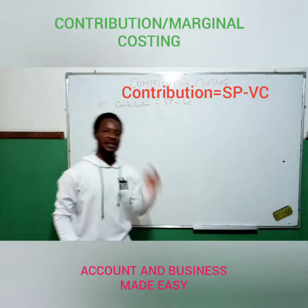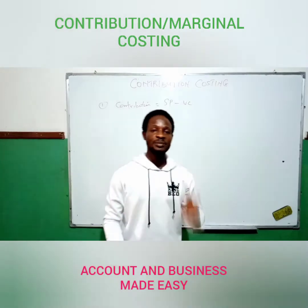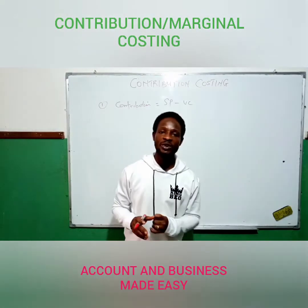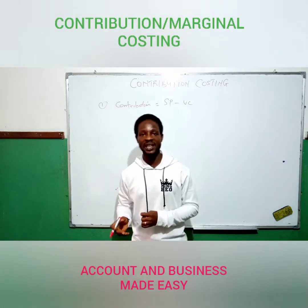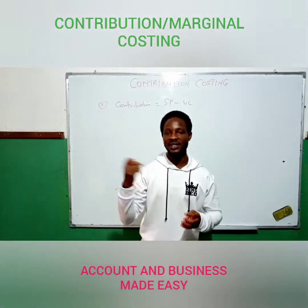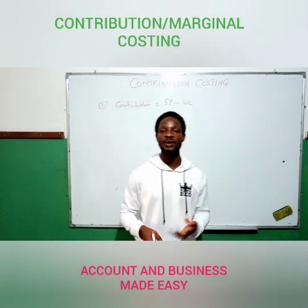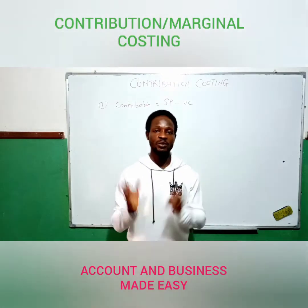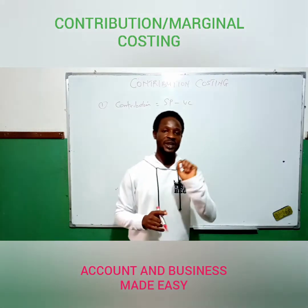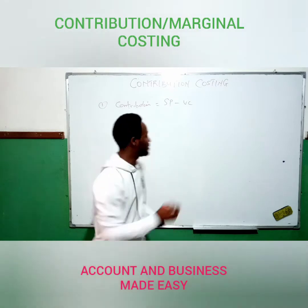Contribution is selling price minus variable cost — selling price per unit and variable cost per unit. The variable costs, as stated earlier, are costs that change with level of output, like material cost, direct wages, or other variable overheads per unit. These are deducted from selling price per unit, which gives us contribution per unit.